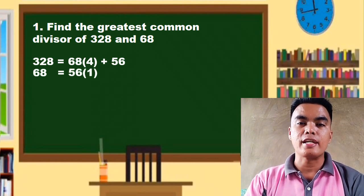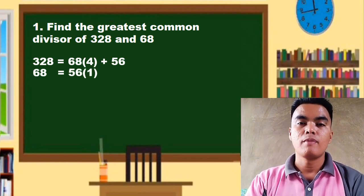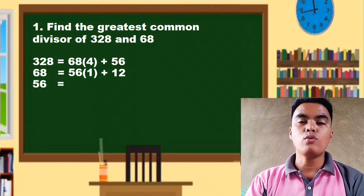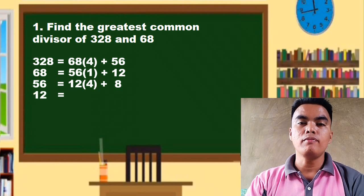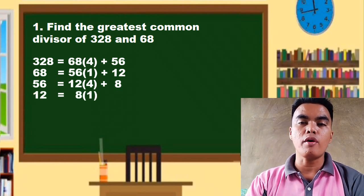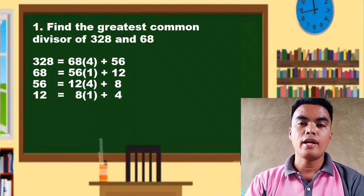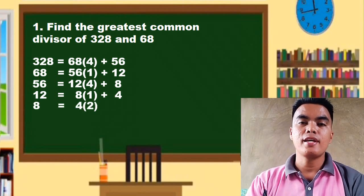56 times 1 plus 12. Now we have 56 equals 12 times 4 plus 8. Now we have 12 and that is equal to 8 times 1 plus 4...